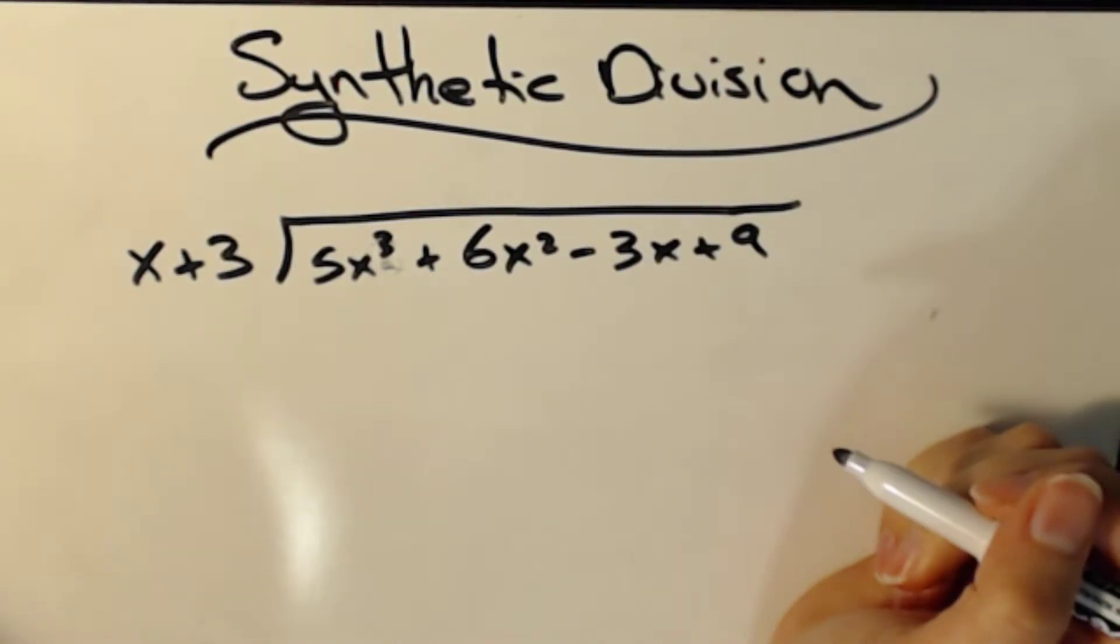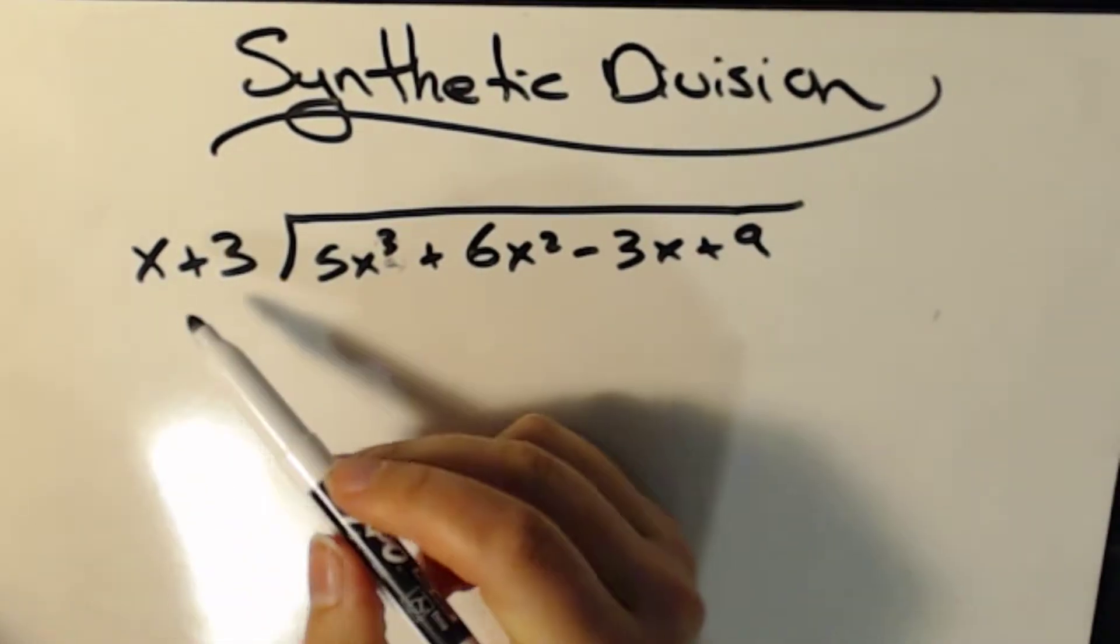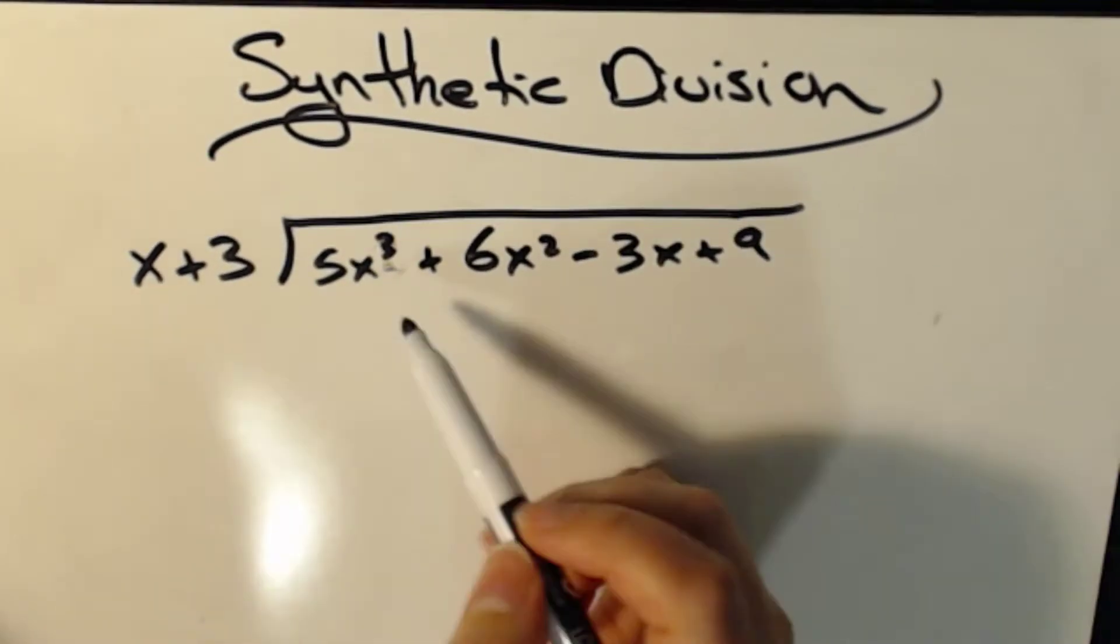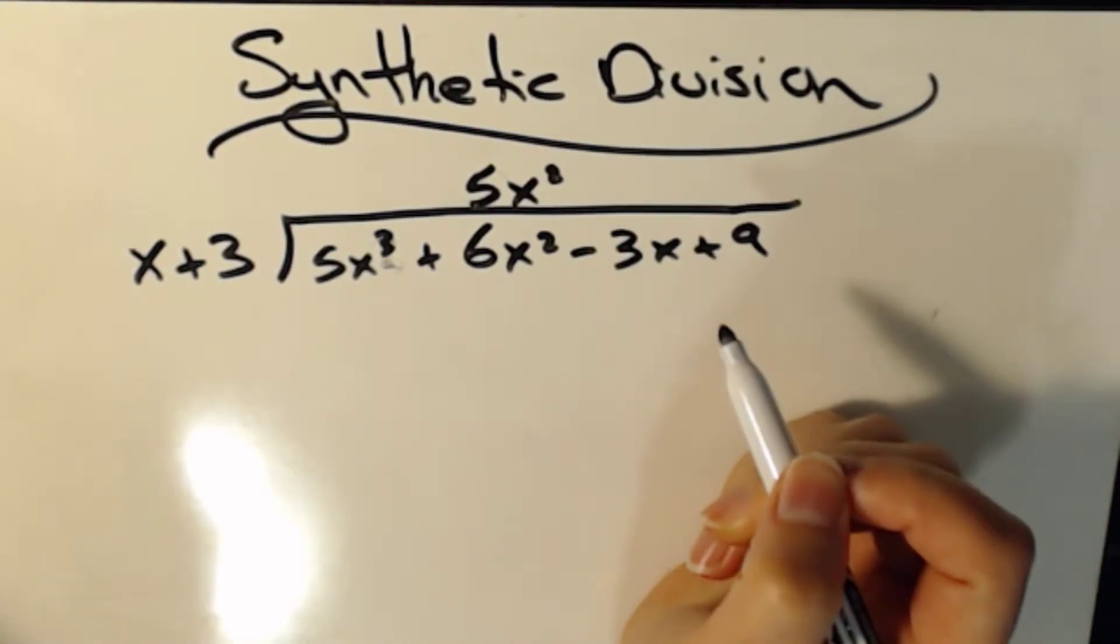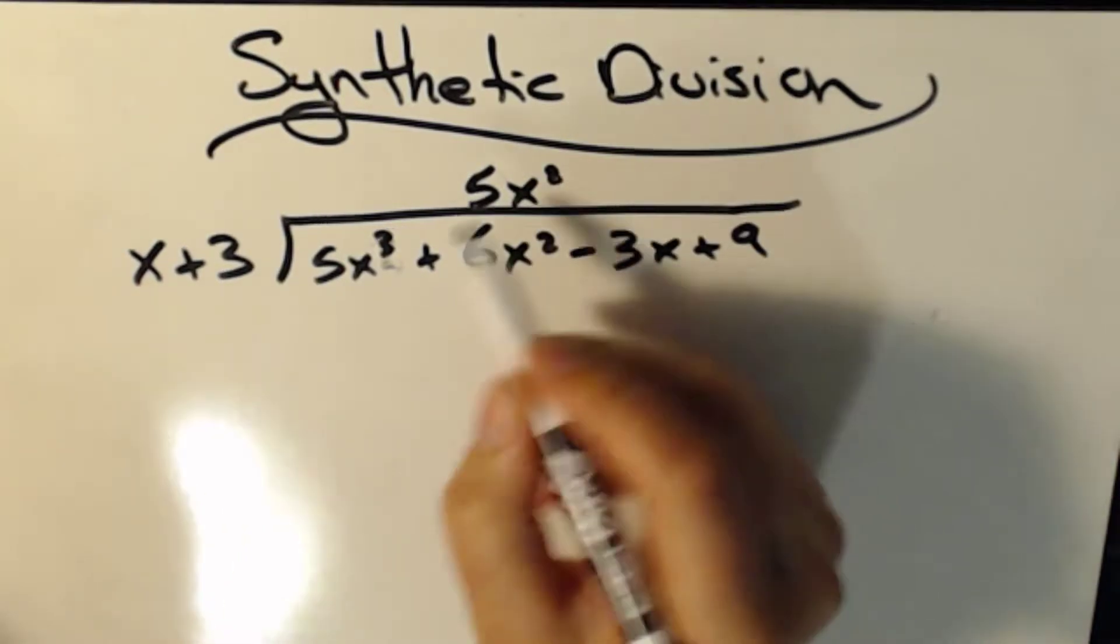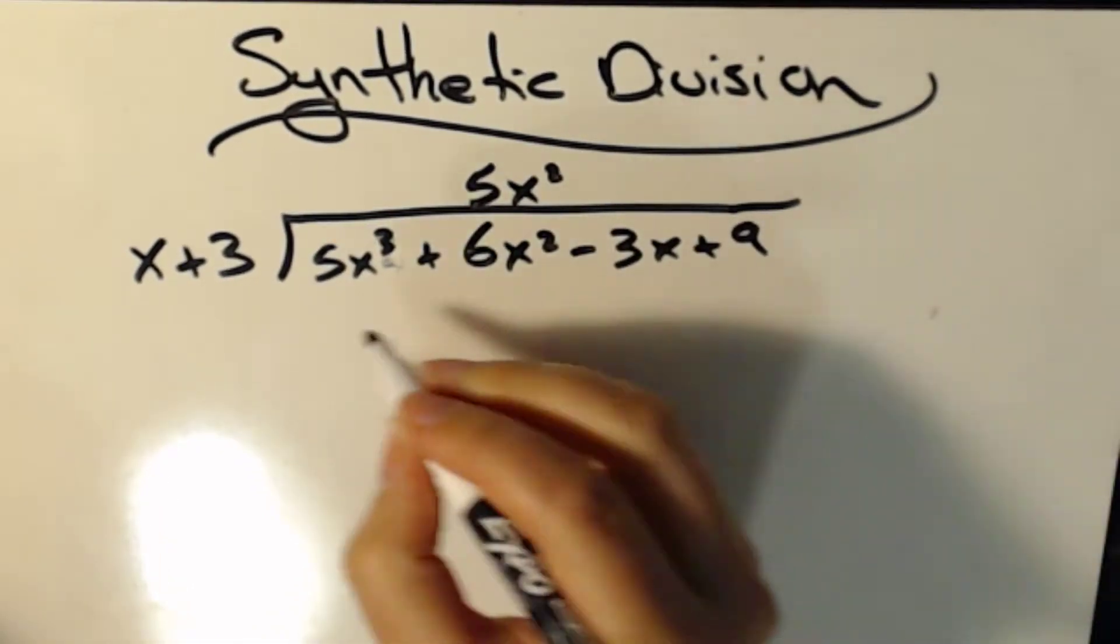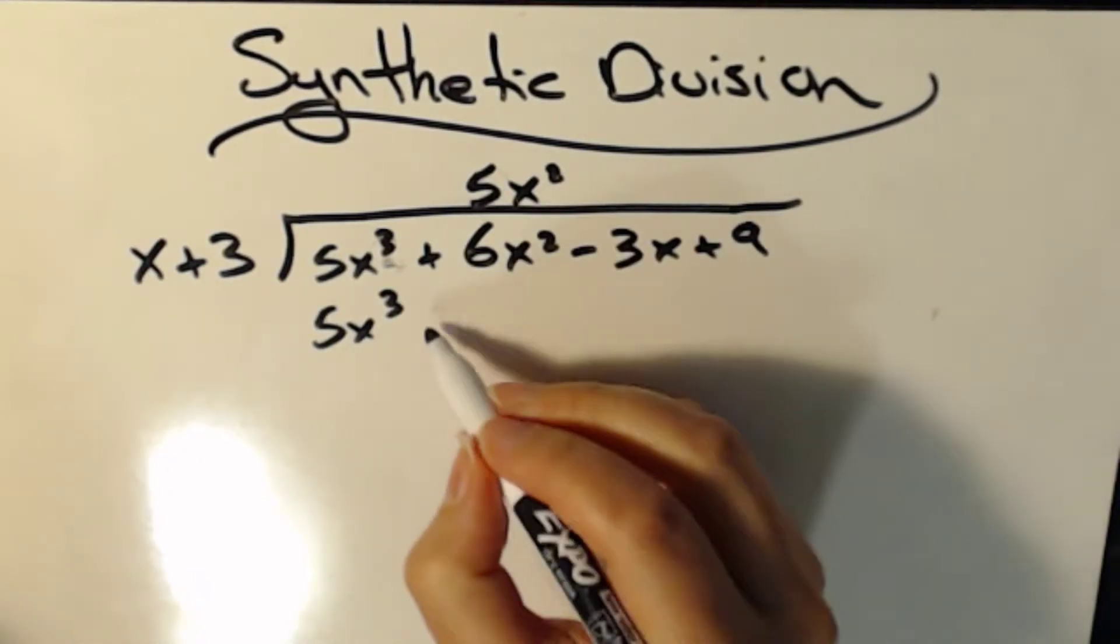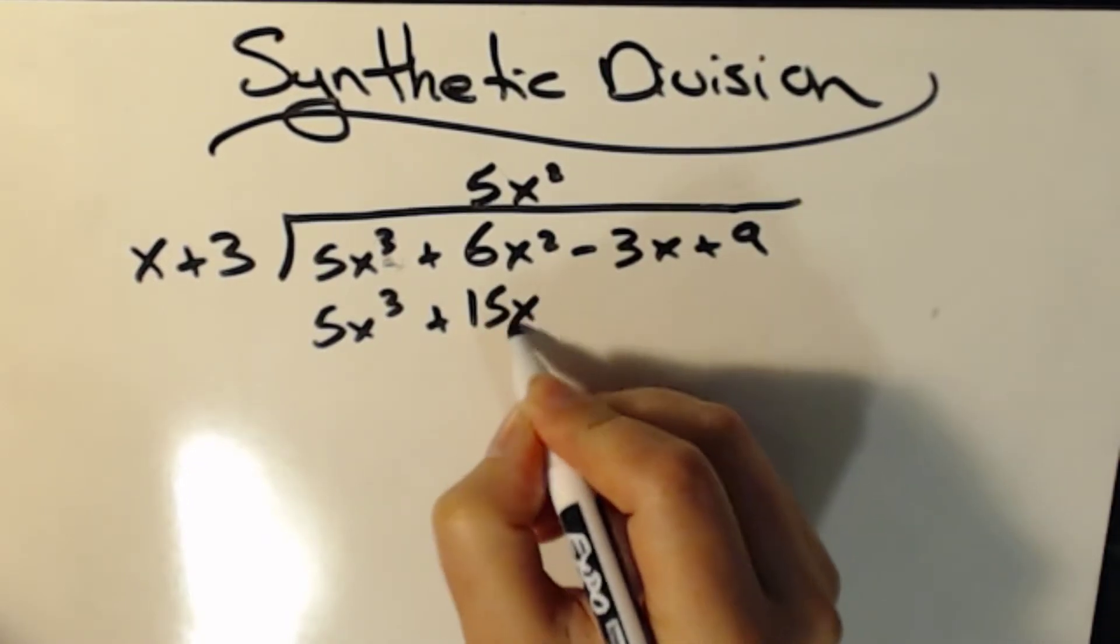Then just for a quick review, let's go through how we would do this. First thing we do is we look at this x and this 5x cubed, and we'd say, what do I need to multiply this x by to get 5x cubed? And the answer would be 5x squared. So that's going to be my first term here.